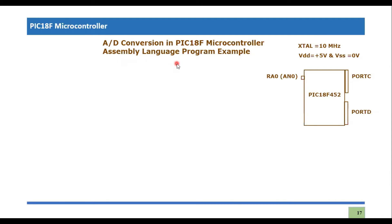Let's see the scenario. We are given the PIC18F452 microcontroller and there is an analog channel which is analog zero, or RA0. RA0 is pin zero of Port A and is also known as analog channel zero. Our analog signal is being applied on this specific pin.